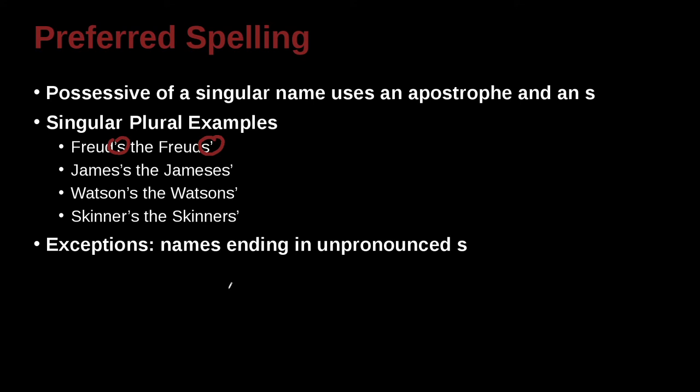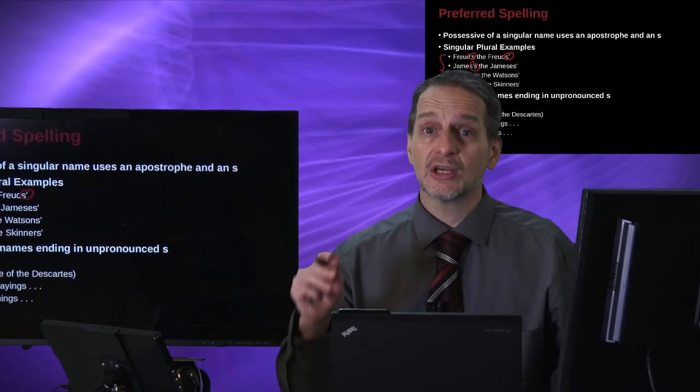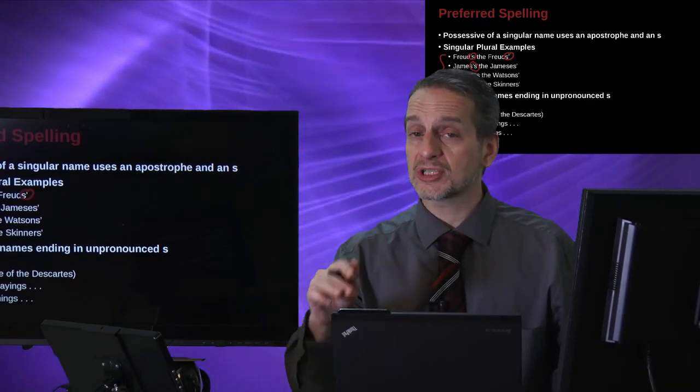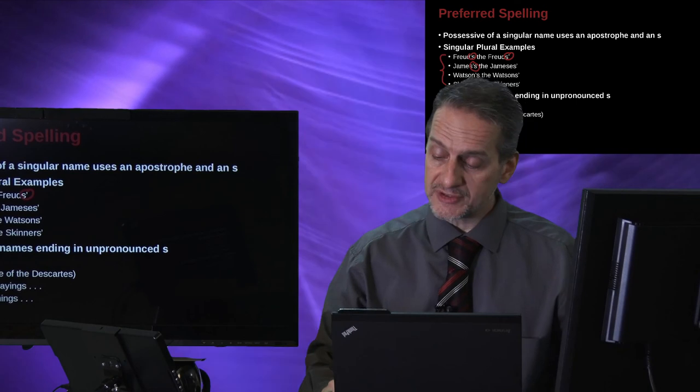So you do have exceptions to this. And this is the trouble with English, isn't it? That there's always exceptions. And here's some really great exceptions that will boggle the mind, such as Descartes. You can easily use Google Scholar and find other people who have cited that work to help you see how they cite it.